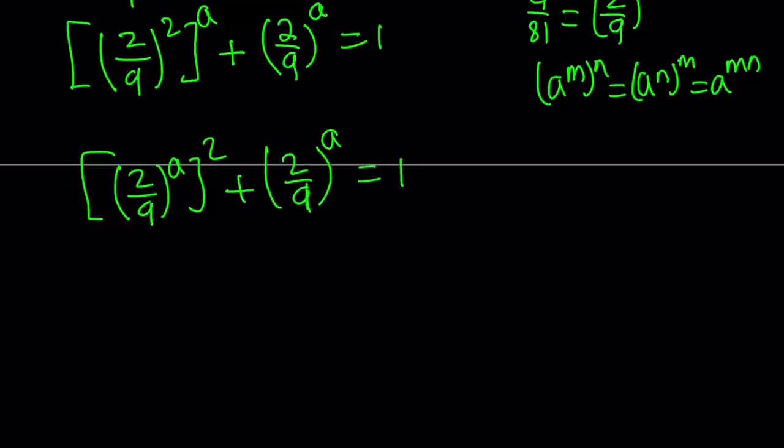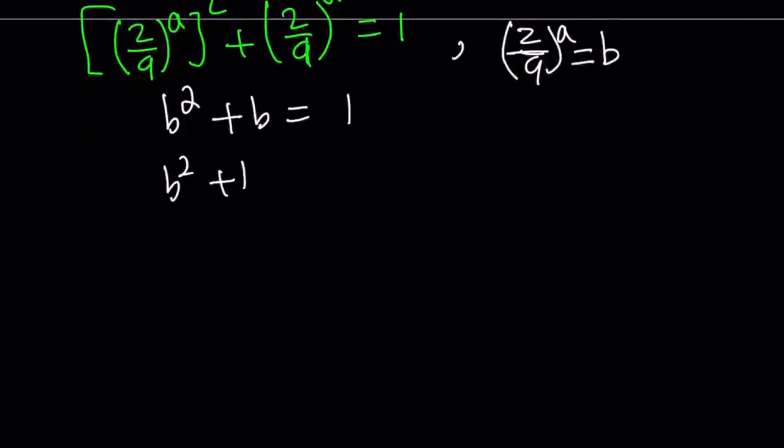Now what do you see here? 2 over 9 to the power a is repeated, but there's a square. So we're going to use substitution. So here's how it goes. I'm going to call this 2 over 9 to the power a. Let's call that b. That gives us the following. 2 over 9 to the power a is b. So this is going to become b squared plus b equals 1. This should be familiar. If you're not familiar with this, then I want you to check out golden ratio. A lot of interesting properties.